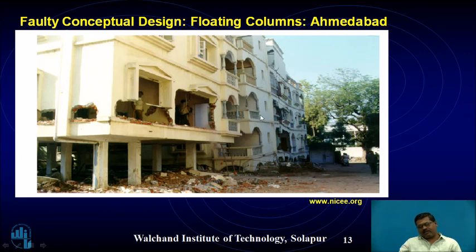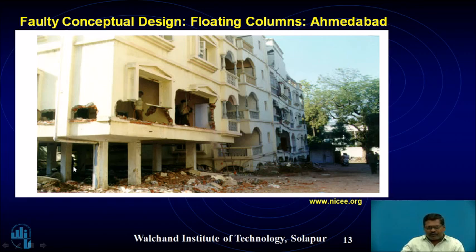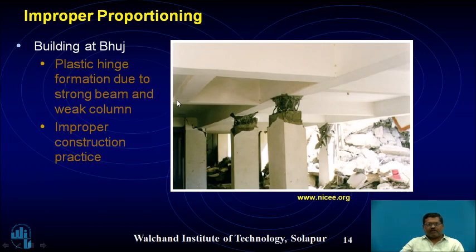A building with good architectural features failed due to faulty conceptual design — specifically the use of floating columns, where columns are taken from beams rather than the ground. Ground floor had parking with columns, and from the first floor slab the columns were introduced as floating columns — a very faulty design. This also illustrates improper proportioning, where beams are heavier than columns, causing columns to fail first.